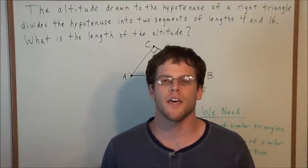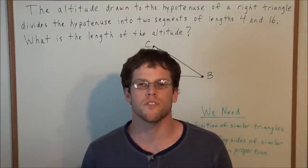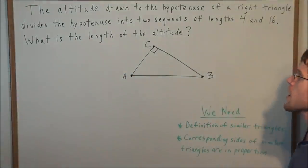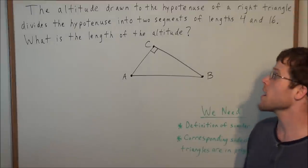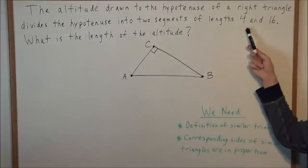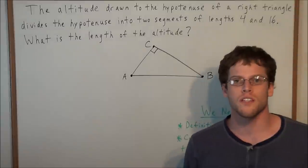Hi, my name is Vincent and today I want to take a look at proportions of right triangles. So we have the problem: the altitude drawn to the hypotenuse of a right triangle divides the hypotenuse into two segments of lengths 4 and 16. What is the length of the altitude?